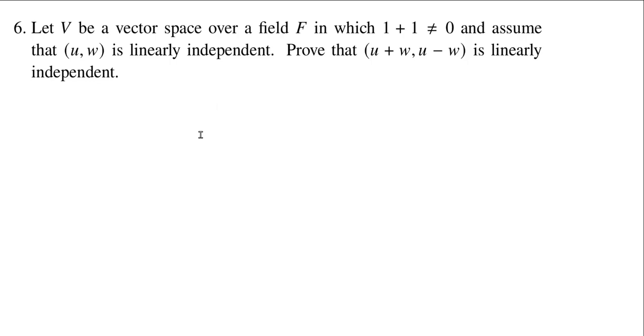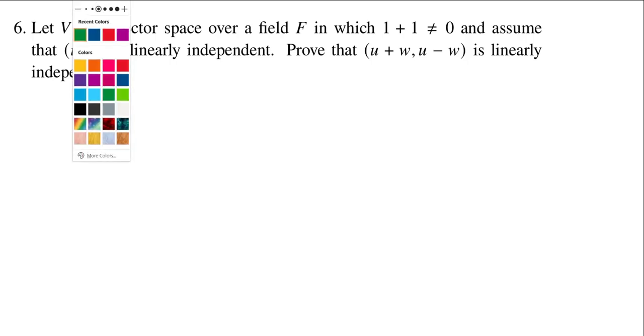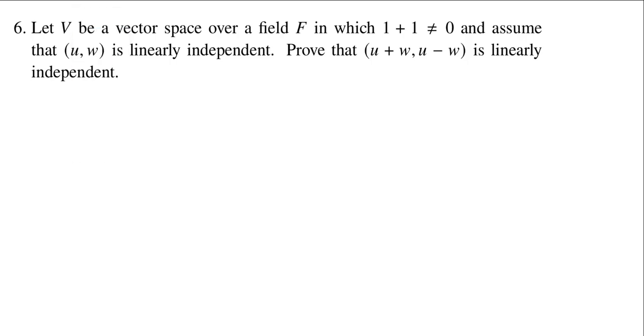So the straightforward standard way to do this is we go back to our theorem after the definition of linear independence. And we show that the 0 vector can be written uniquely as a linear combination of u plus w and u minus w. Now we already know you can write the 0 vector as the trivial linear combination, where you just use 0 as all your scalars.